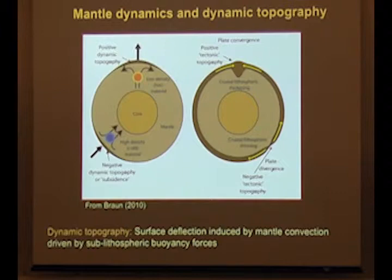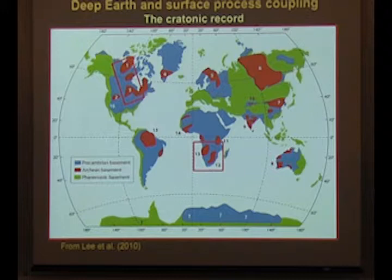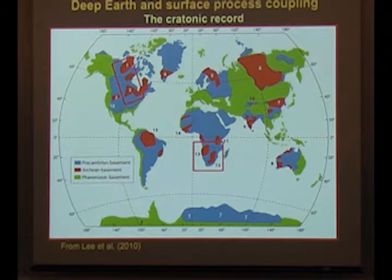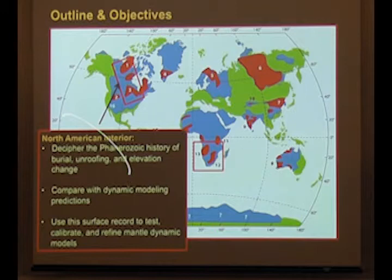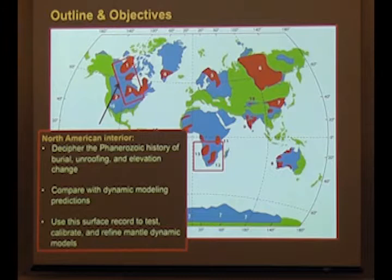I would argue that one of the best places to study dynamic topography is in the middle of cratons, where cryptic elevation changes have long puzzled geologists. In this setting, if a continent is undergoing elevation change, it's hard to invoke tectonic processes to explain it. Today I'll focus on two areas: first, work in the North American cratonic interior using low-temperature thermochronology to decipher the large-scale Phanerozoic history of burial, unroofing, and elevation change, and how we're comparing those results with dynamic modeling predictions. Ultimately we want to use this surface record to test, calibrate, and refine some of these mantle dynamic models.